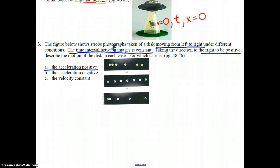So in which diagrams does it show the object speeding up in a positive direction? Remember, right is positive. And so in all these pictures, the object is traveling to the right.